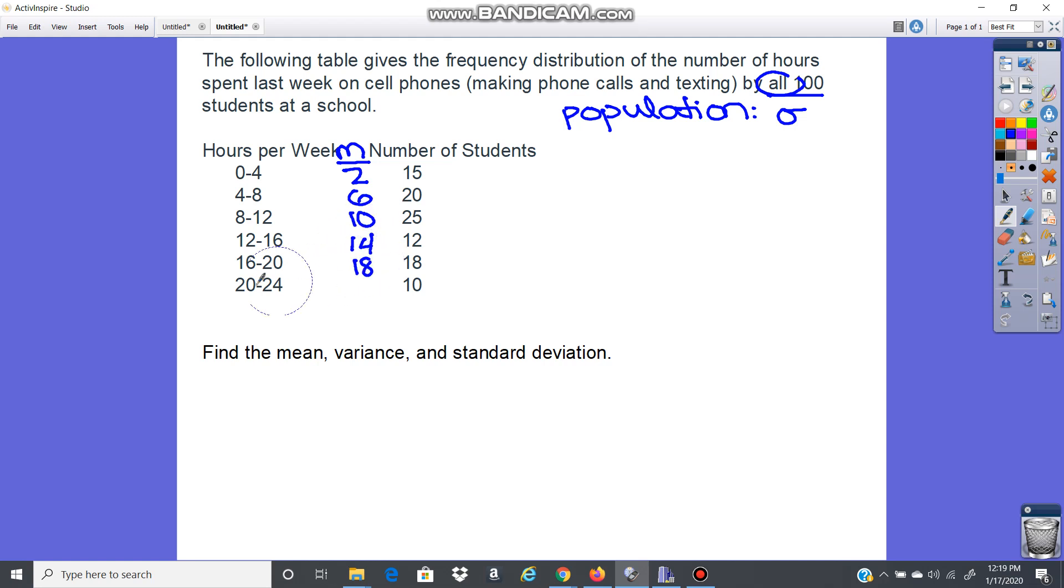36 divided by two, 18. 20 plus 24, 44 divided by two, 22. Okay, now we have everything we need to put this into a list.